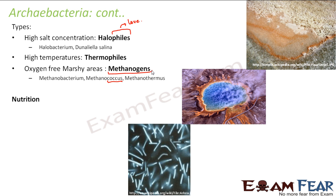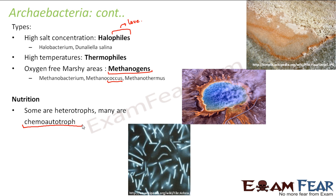Now let us talk about their nutrition — what kind of food do they take? Some are heterotrophs. Many are chemoautotrophs, and most of them fall under the category of chemoautotroph. That means they prepare their own food with the help of chemicals.